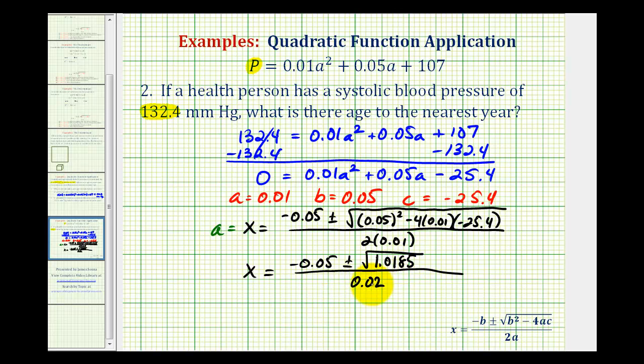Now remember, we are going to have two solutions here, but since this X value or A value represents the age, we know the age can't be negative. So the only possible solution would be X equals negative 0.05 plus the square root of 1.0185 divided by 0.02. And they want this to the nearest year, so now we'll go back to the calculator to determine this approximate value.